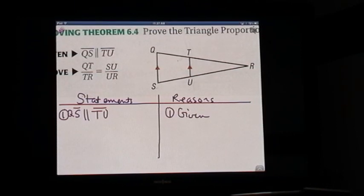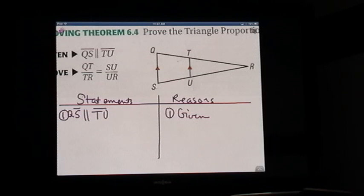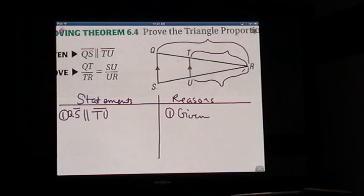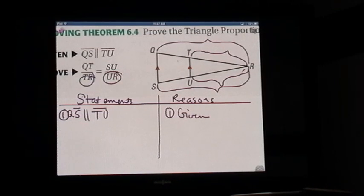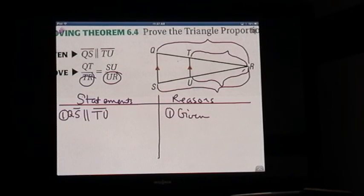The first thing we have to do is start by proving that these two triangles are similar so that we can work with the parts of the triangle. Once we've proven that these two triangles are similar, we can say that this whole side is congruent to this whole side in the same way as this whole side is congruent to this whole side. Proportionality means the sides are proportional — that's the definition of similar triangles.